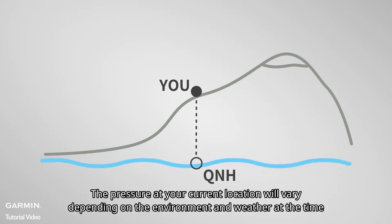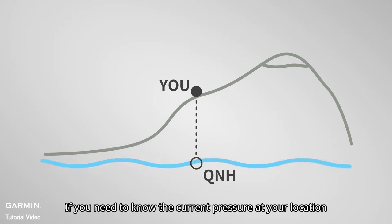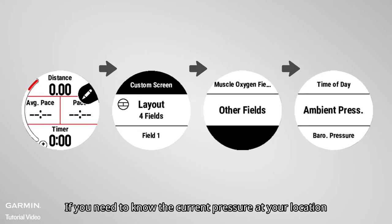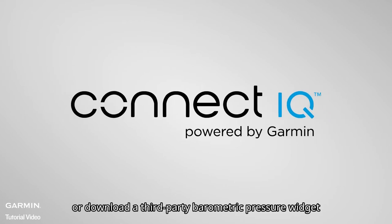The pressure at your current location will vary depending on the environment and weather at the time. If you need to know the current pressure at your location, you can add ambient pressure in the customizing data screen from your activity setting page, or download a third-party barometric pressure widget.